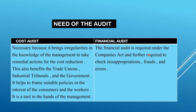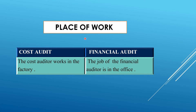Financial audit is required under the Companies Act and to check misappropriations, frauds, evasions, and errors in books of account. Regarding place of work, the cost auditor works in the factory — examining each and every stage of production — whereas the financial auditor works in the office examining the books of account.